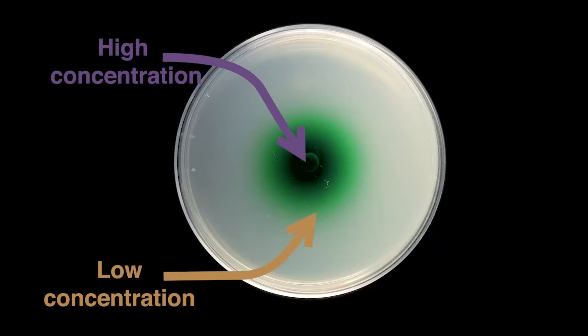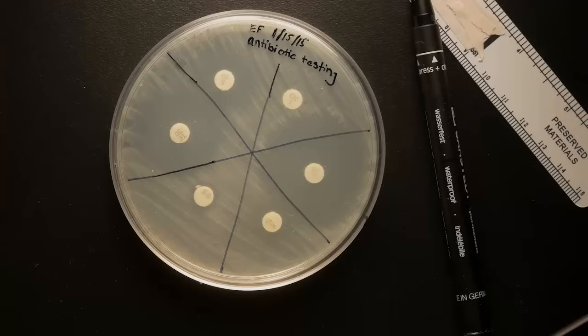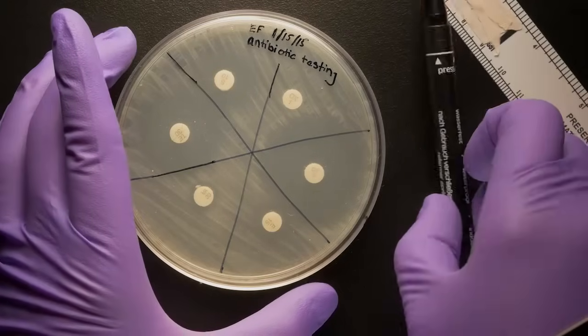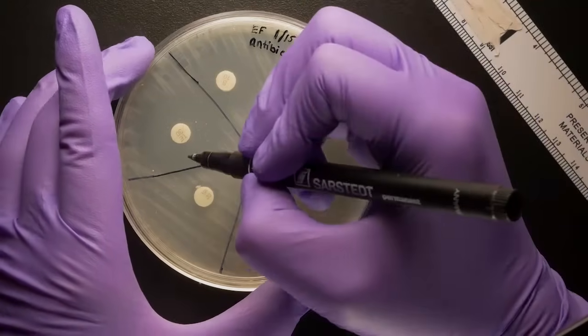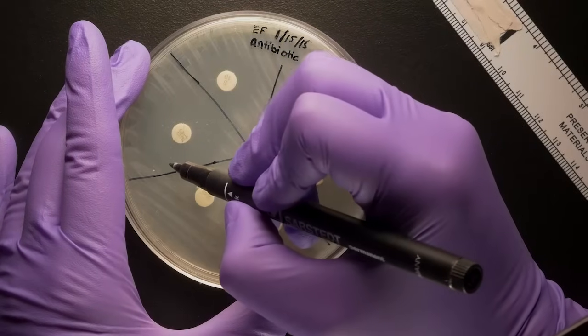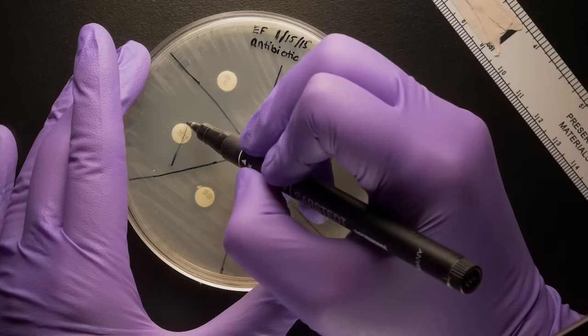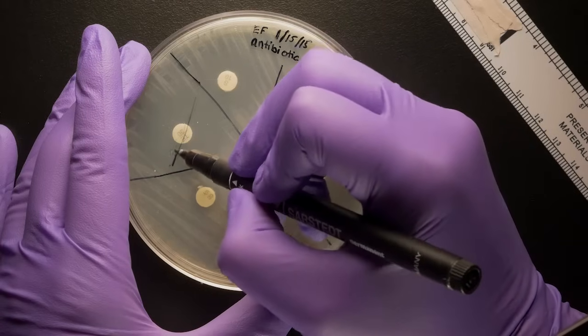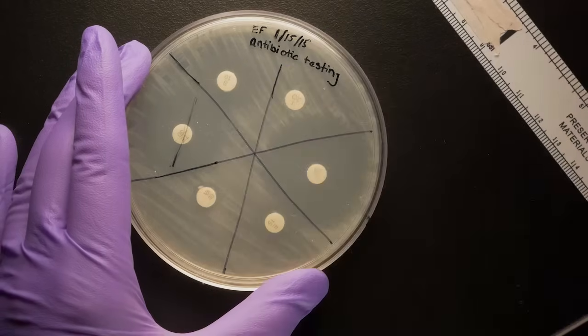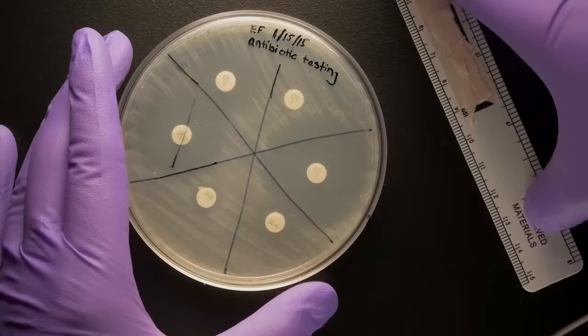Remember how the antibiotic is most concentrated near the disc? Well, what concentration do we need to kill the bacteria? You can measure the diameter of the clearing to determine how susceptible the bacteria is. You can draw a line with a marker to help you measure. Be sure you measure in millimeters.